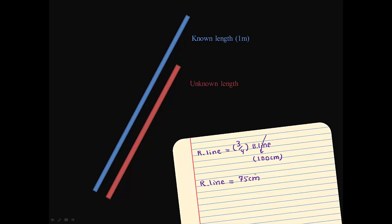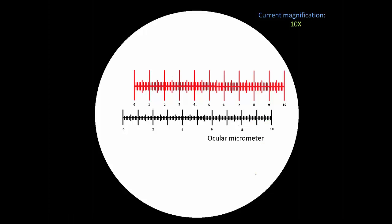We are going to apply the exact same logic when trying to calibrate the ocular micrometer. We load a special kind of slide onto the stage. This slide contains a factory-made ruler with a known length. This is called the stage micrometer. Stage micrometers can have different lengths. 1 millimeter and 2 millimeter ones are common. In this video, we will work with a stage micrometer that is 1 millimeter in length.